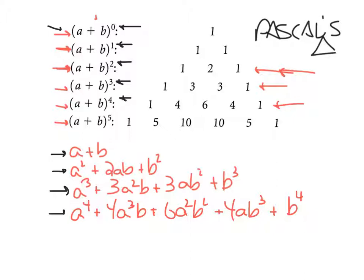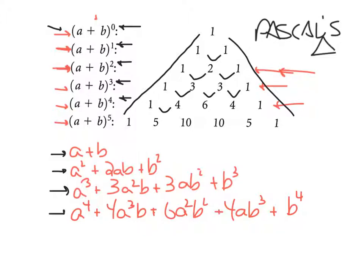One more thing about this slide — we've been on it a long time. The way this triangle works is: the ones go down the triangle, but the other numbers work like this: one plus one is two; one plus two is three; two plus one is three; one plus three is four; three plus three is six; one plus four is five; four plus six is ten; six plus four is ten; four plus one is five. So the way you come up with your triangle is you just add the two numbers above to get the next one, and it gives you all your coefficients.